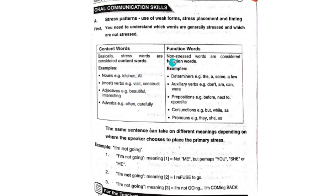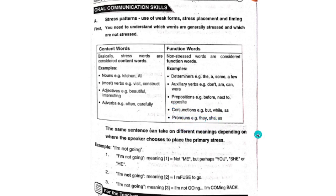Function words — non-stressed words are considered function words. Examples include: determiners (the, a, some, a few), auxiliary verbs (don't, am, can), prepositions (before, next to, opposite), and conjunctions (but, while, as), as well as pronouns (they, she, us).